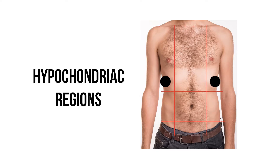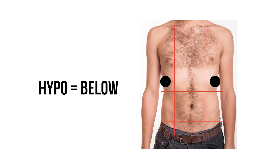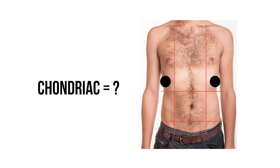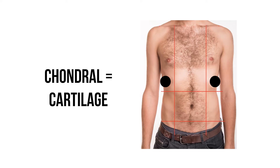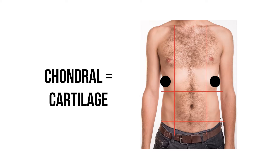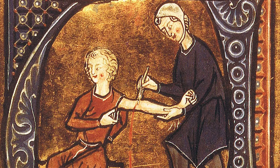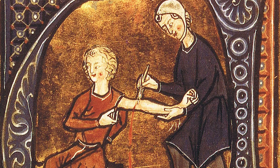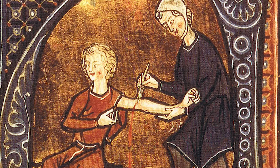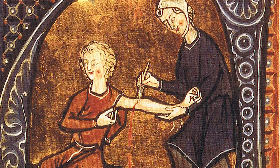And then finally we have the two hypochondriac regions. We've already seen that hypo is Greek for below — but what about the rest of the name? Anything chondral relates to cartilage, and the organs in this area lie partly below the cartilage of the inferior ribcage. As a side note, this is also where we get the term hypochondriac from. In medieval medicine the belief was that any illness without an obvious cause was related to an overproduction of black bile from the hypochondriac regions.